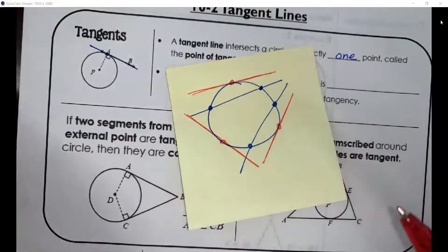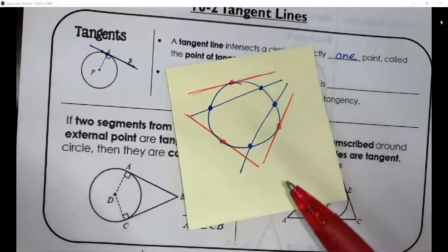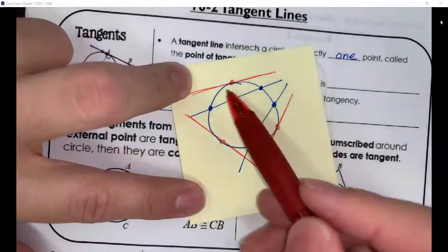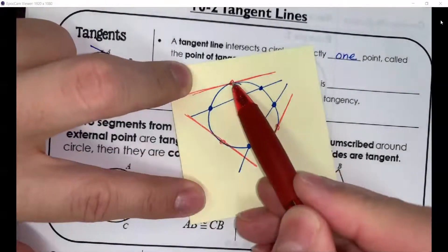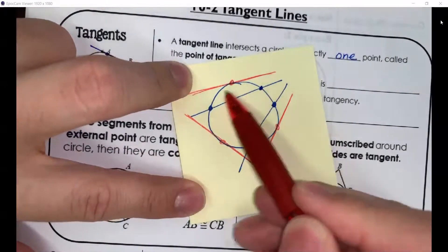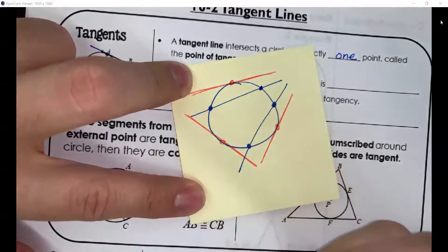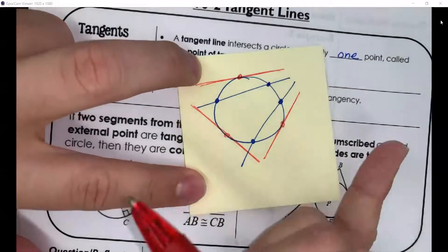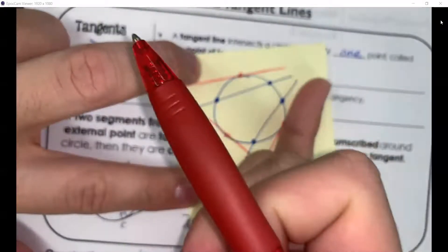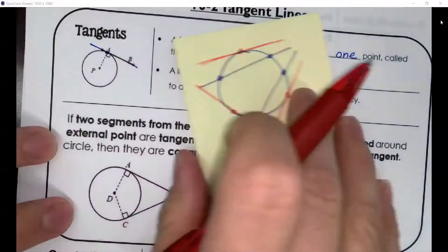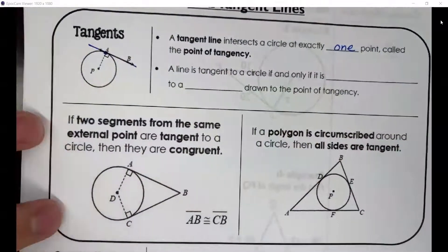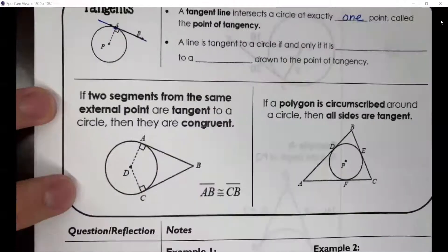Tangent lines are easy to spot because a tangent line on a circle essentially looks like a line that's just touching the edge of the circle — kind of like a line laying along the edge of the circle. So they're really easy to spot when you see them in problems.